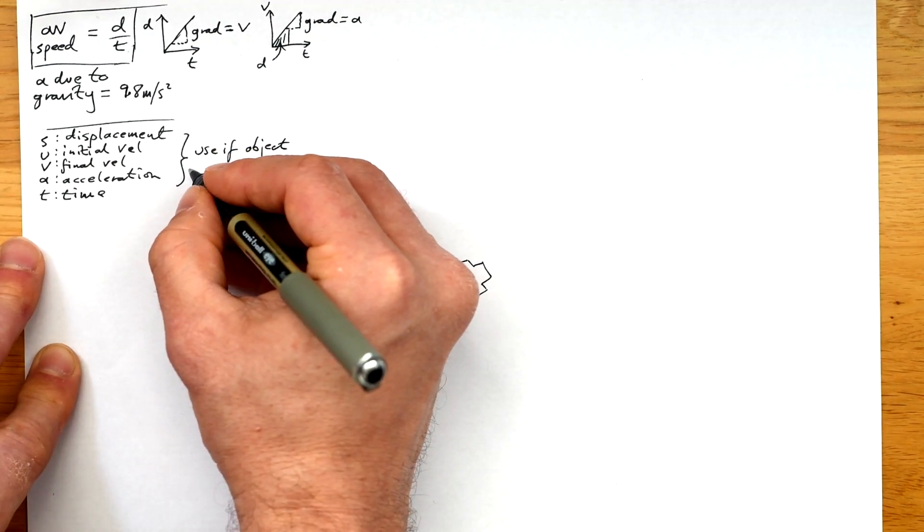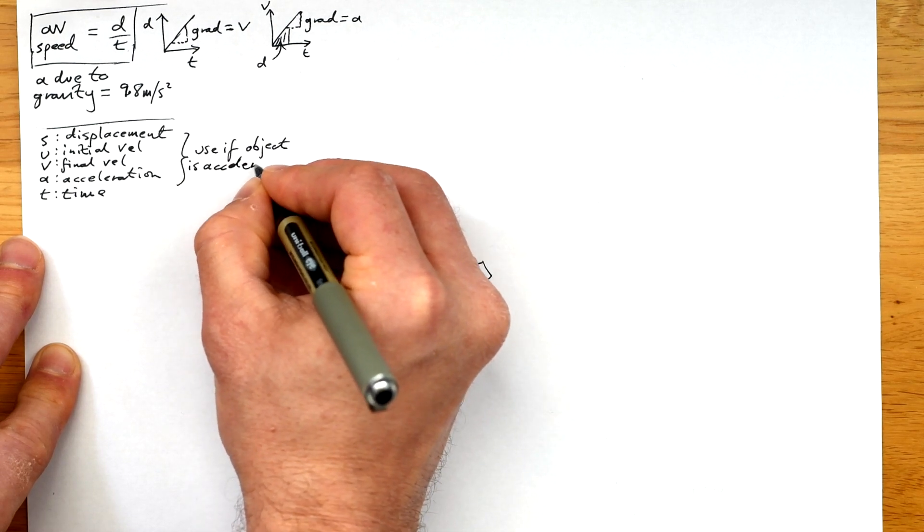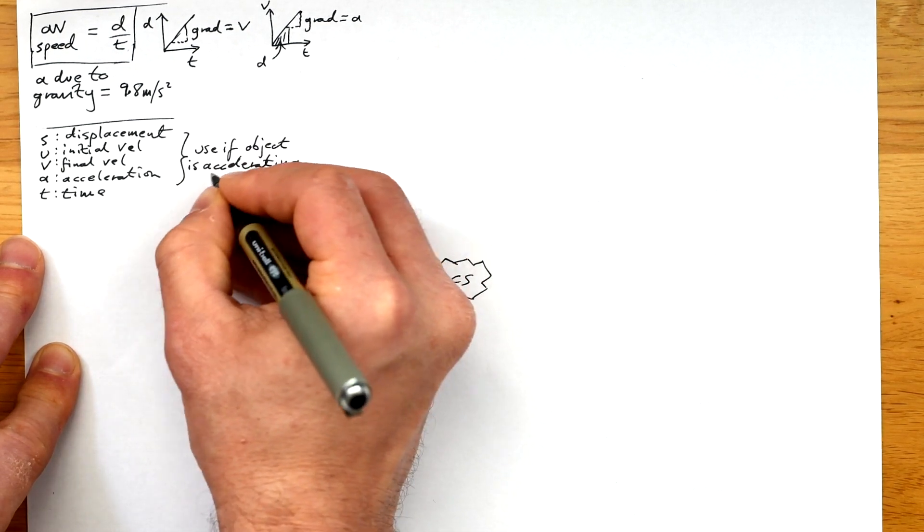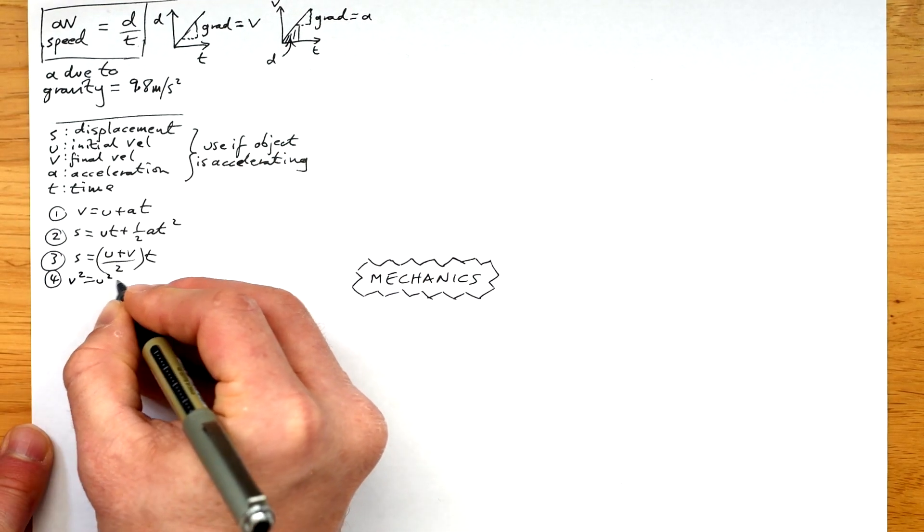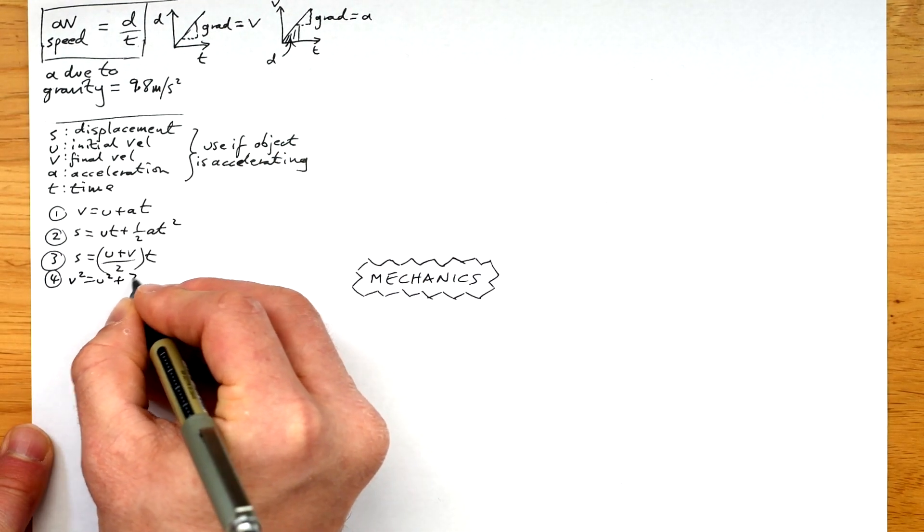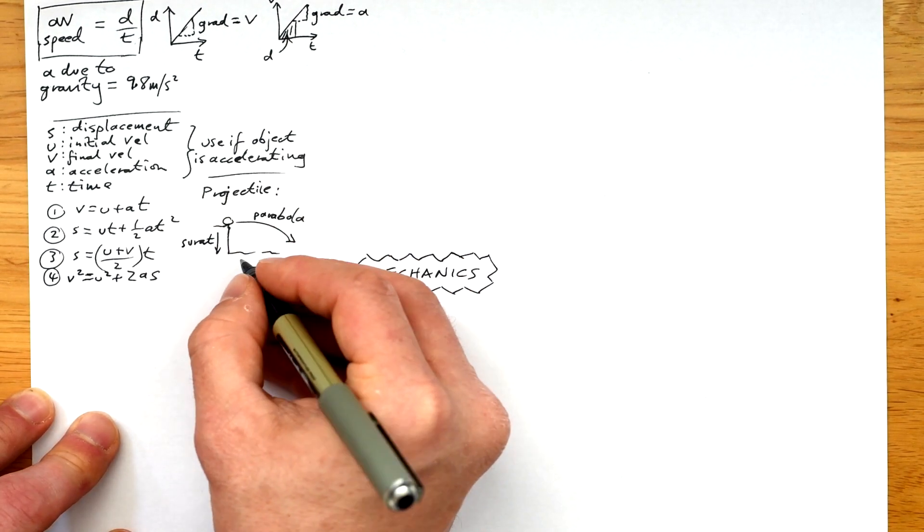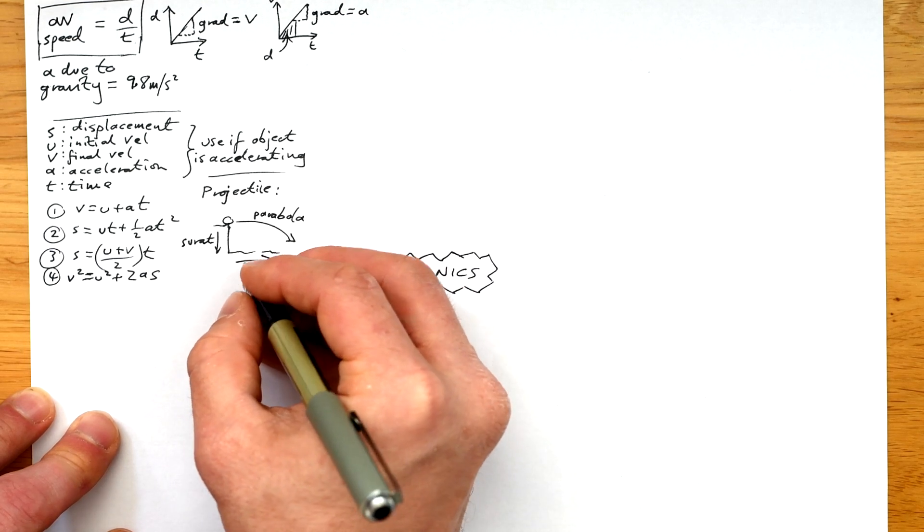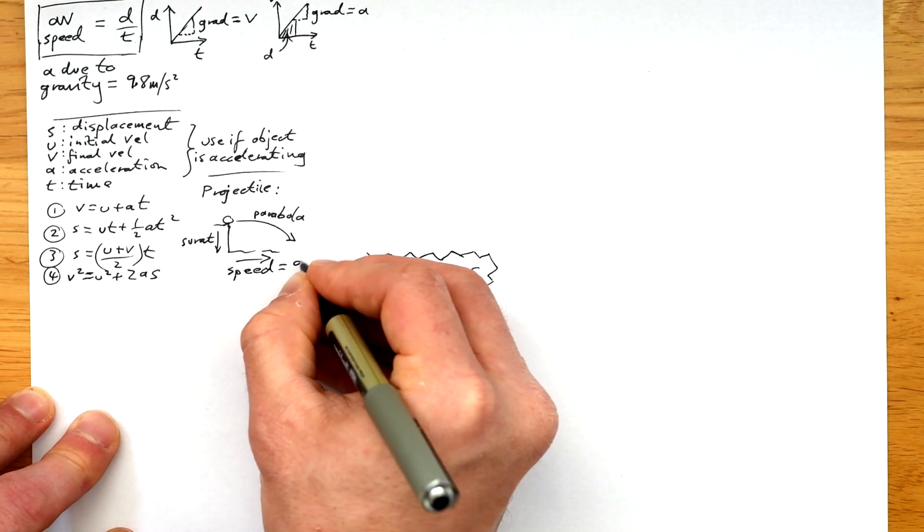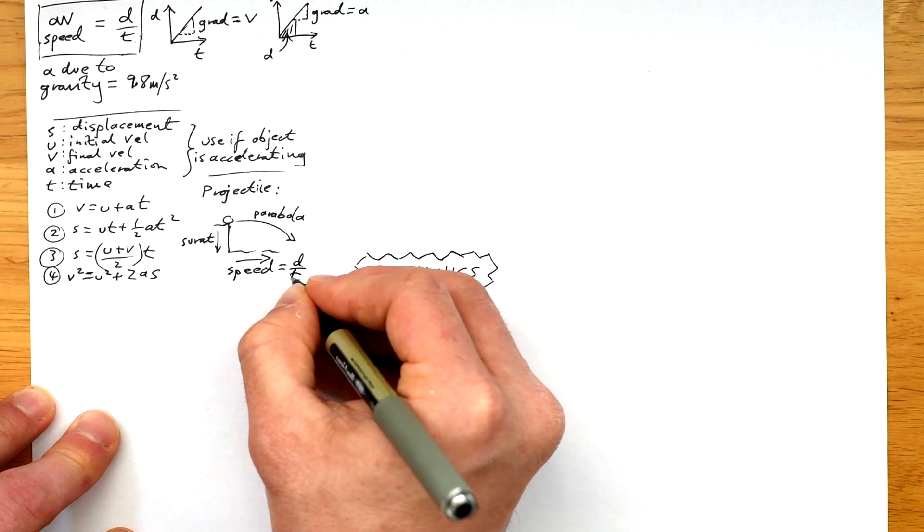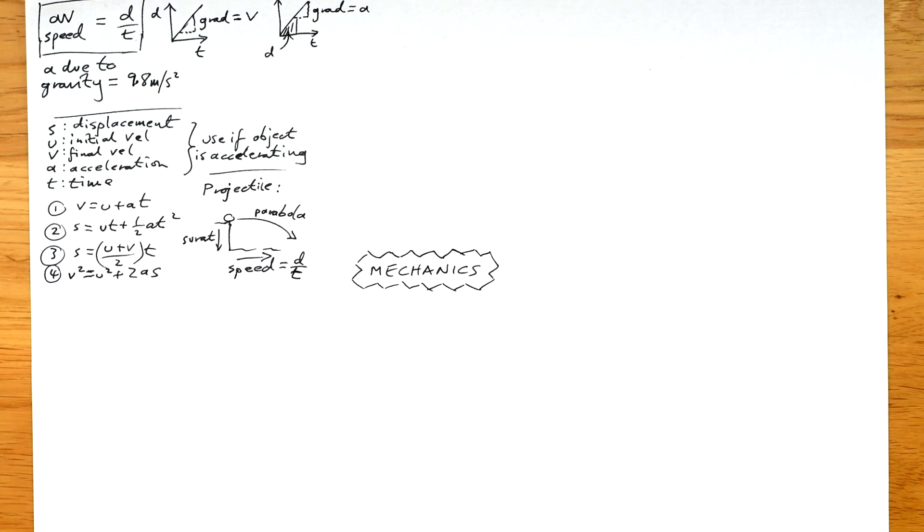What about SUVAT? We use the SUVAT equations or Newton's equations of motion if the object is accelerating. If we're chucking something up or dropping something, doesn't matter, acceleration is always 9.8 metres per second squared towards the ground. So it might be minus if something's moving upwards. Don't forget that for projectile motion, if something's chucked horizontally, then we use SUVAT vertically, but then we just use speed equal distance over time horizontally because we assume there's no frictional forces. The path that an object takes in this case is a parabola or it's parabolic.